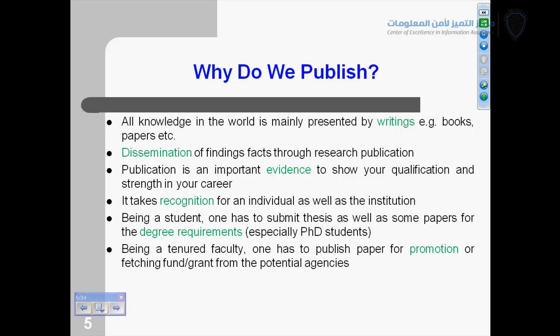Thirdly, you have to fetch funds. For example, you write a proposal and send it to the agency. How can they trust you? They trust you by seeing your record of publications — that you have published a lot of good journal papers, good transaction papers, or good conference papers. Then they will trust you. This person is trustworthy and has a background of sound research, so they normally consider this as well.